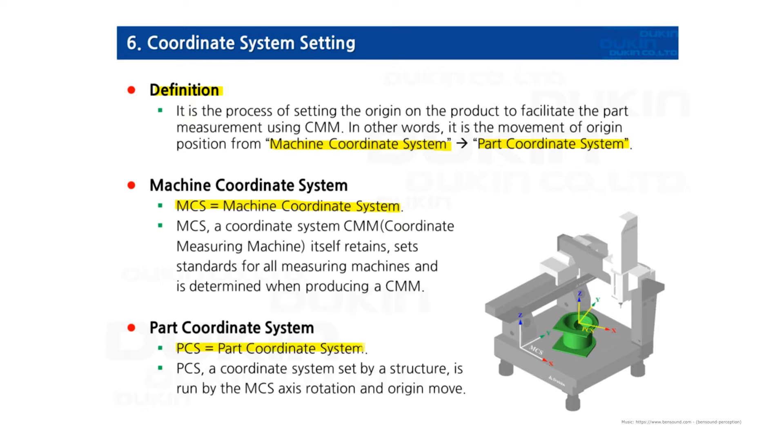PCS is short for part coordinate system. It is a coordinate system that assigns origin to a specific part of the product according to the designer's intention.